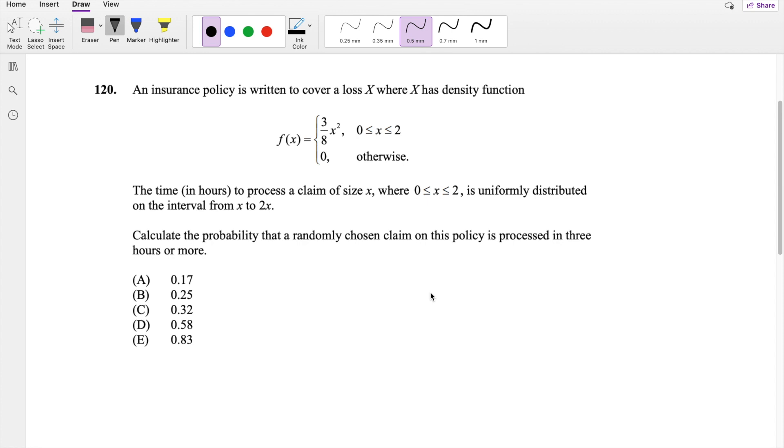Okay, as if you've attempted it, let's just dive right in. They say this is f(x) and the time in hours to process a claim of size x is uniformly distributed on an interval from x to 2x. I'm actually going to call this y to be the time it takes to process. This is actually dependent on y, so f(y|x) is uniform on x to 2x.